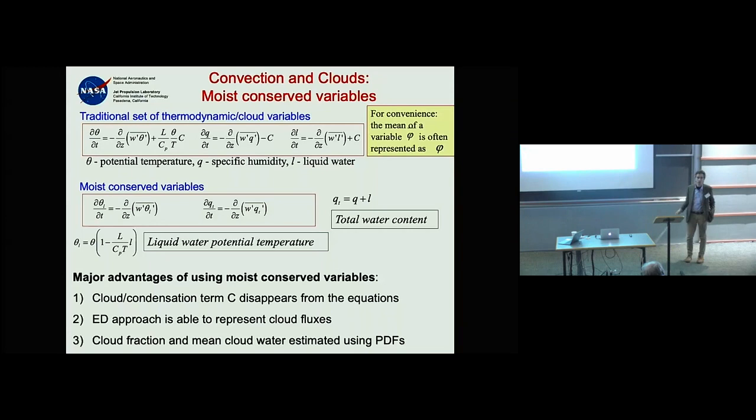That term C is fine for infinitesimal quantities in time and space, but when you're averaging over boxes of 100 by 100 kilometers you don't know how to construct it. Using conserved variables also avoids the problem that eddy diffusivity gives the wrong flux direction for cloud water.